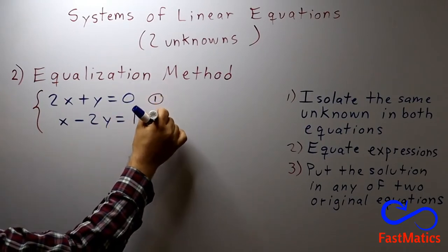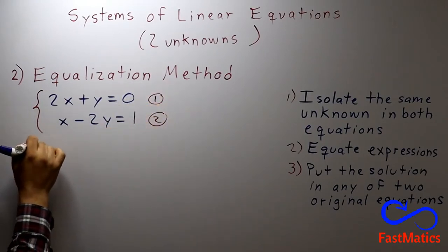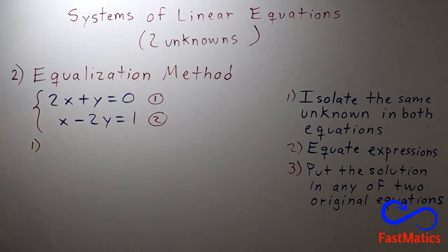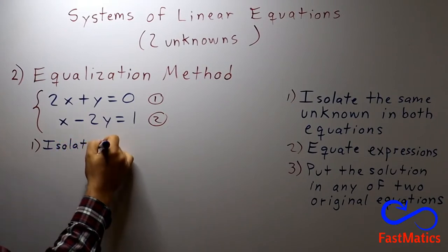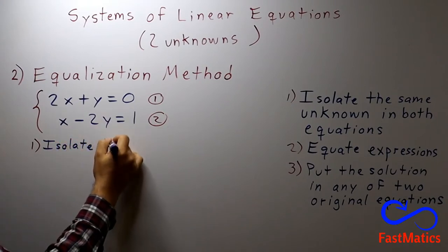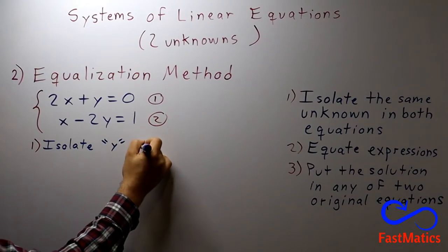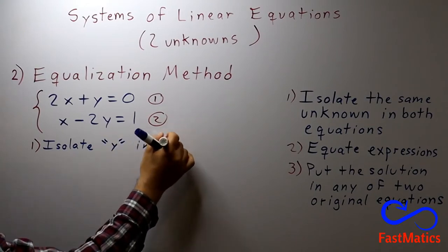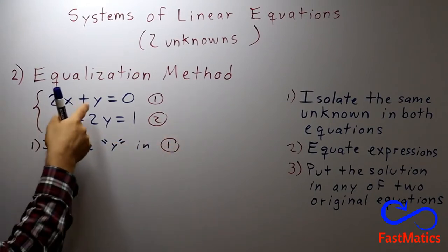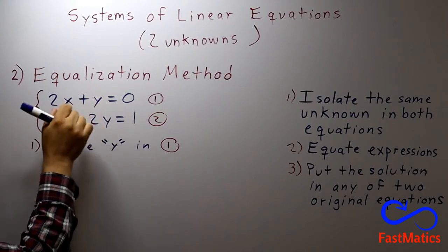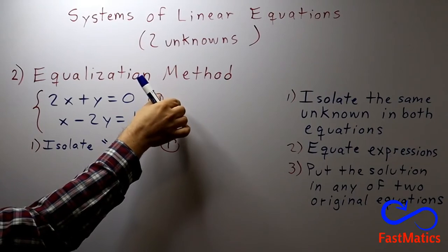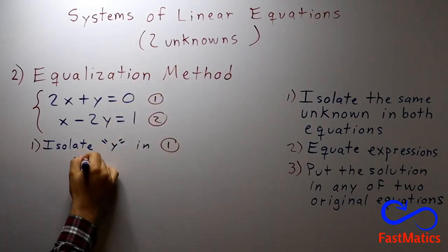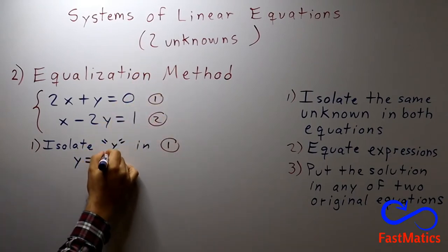So we write step one. Isolate in this case y in our first equation. So if I isolate y I will pass 2x to the other side as negative 2x. So we have y equals negative 2x.